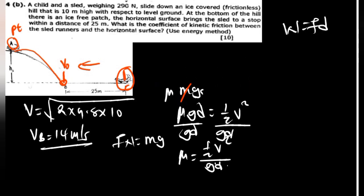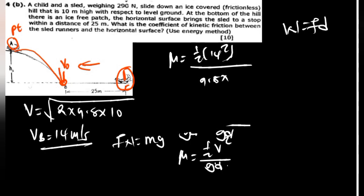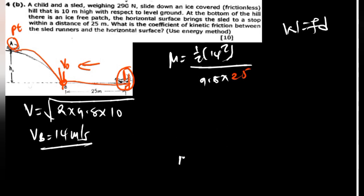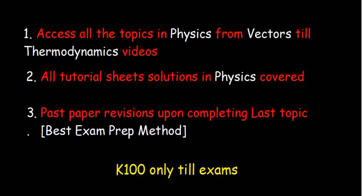Plugging in the values: mu equals 0.5 times 14 squared, divided by 9.8 times 25. That gives mu equals 0.5 times 196 divided by 245, which equals 0.4. So the coefficient of kinetic friction is 0.4. Note that mu is always less than or equal to 1 — if you get a value greater than 1, your answer is wrong.